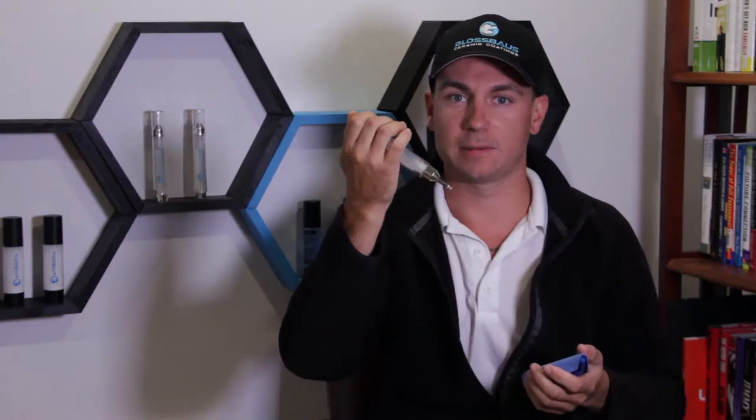What it also allows you to do is when you're doing a car, you can be more efficient with it because you can systematically put the exact amount of drips you'll need per panel. So once you use this system a few times, you can see okay, panel that size I'm going to use typically around five to six drips onto my gloss glider applicator.